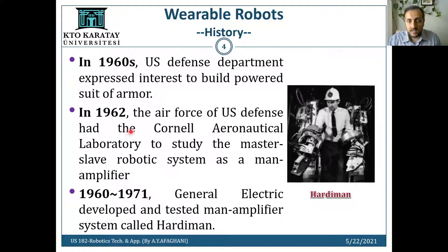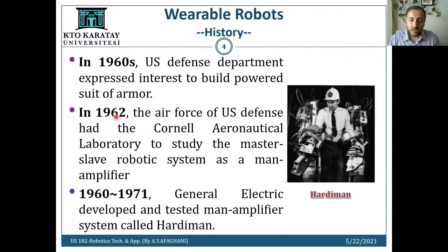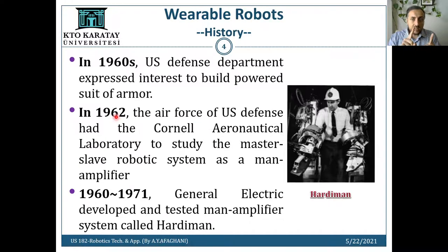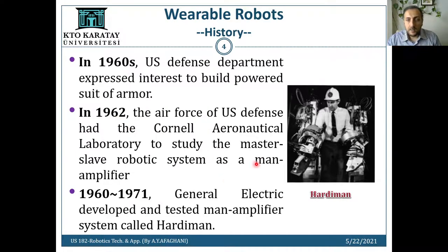In 1962, the US Air Force had the Cornell Aeronautical Laboratory study the master-slave robotic system. America established a laboratory to research this master-slave concept. The idea is that the human is the master — we move — and the robot is the slave. So if I move my hand, the robot moves accordingly. This is the master-slave system.